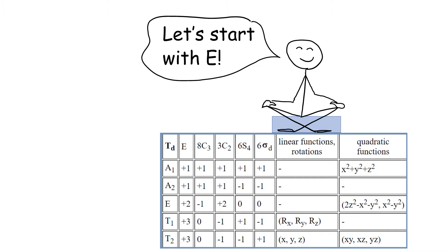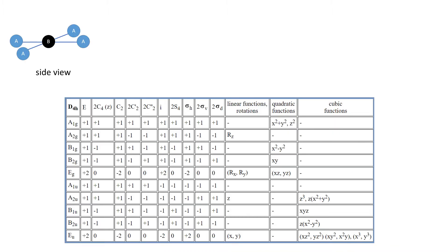So let's start with E representation. Let's imagine some D4H complex. By convention the main axis, here C4, aligns with the Z axis. And let's look at the complex from above.